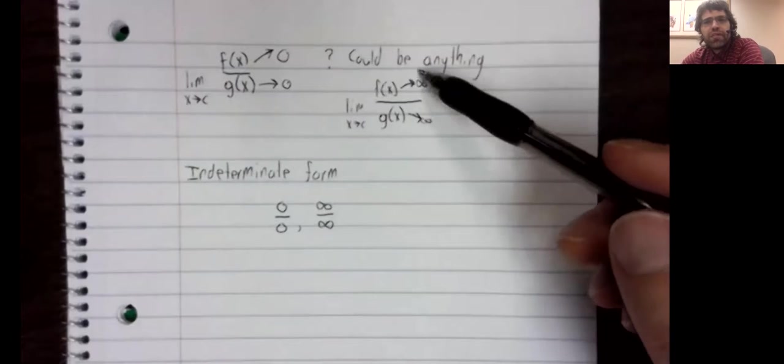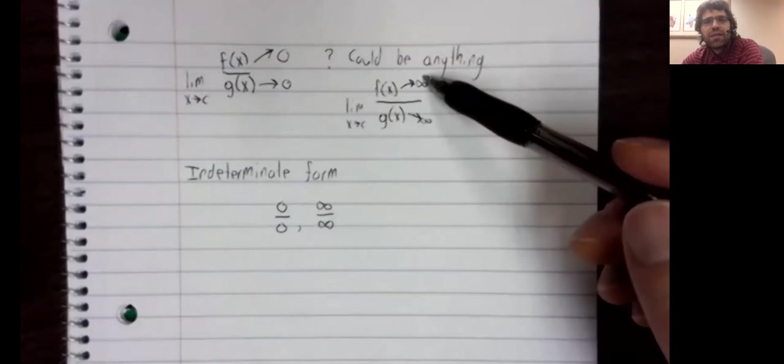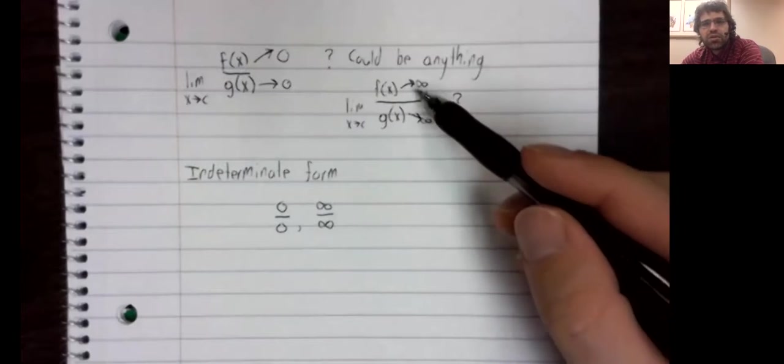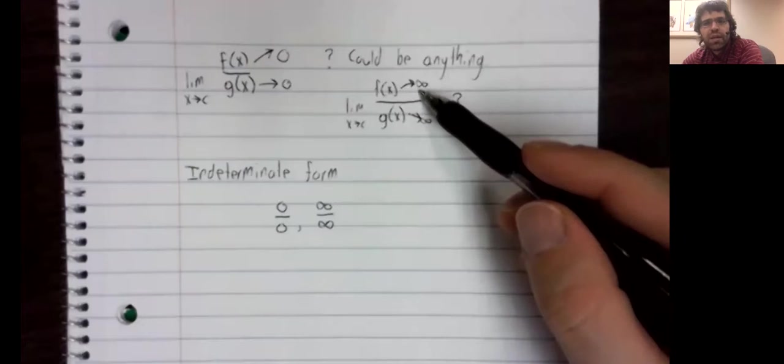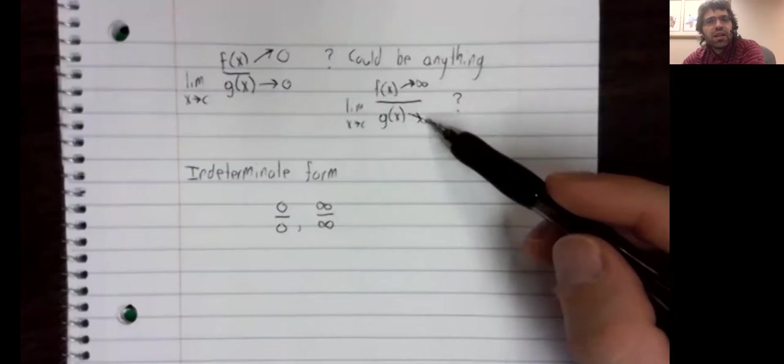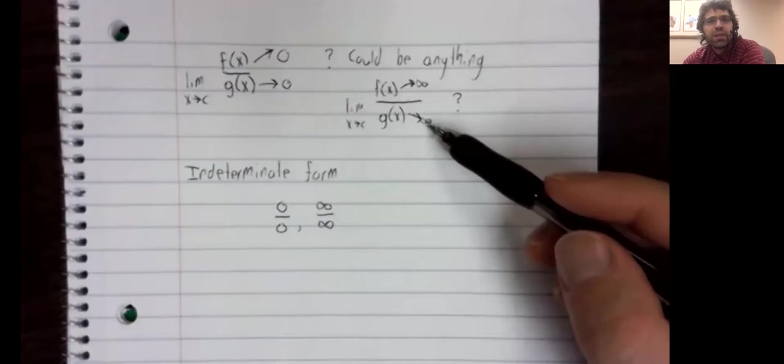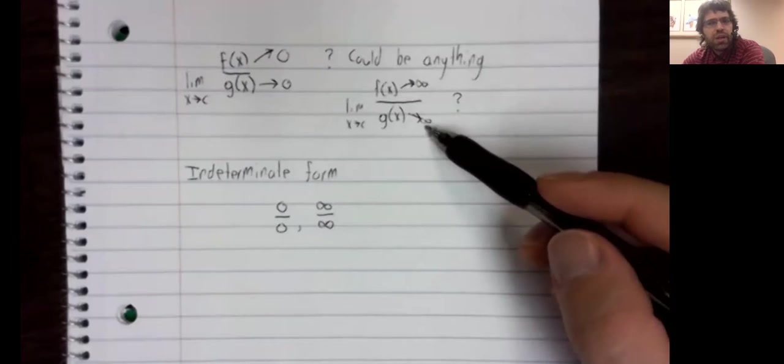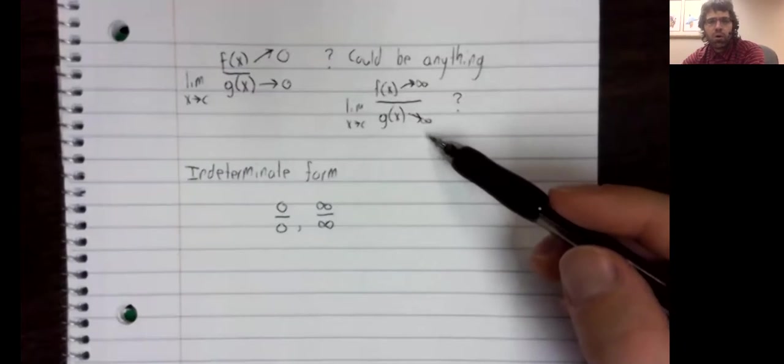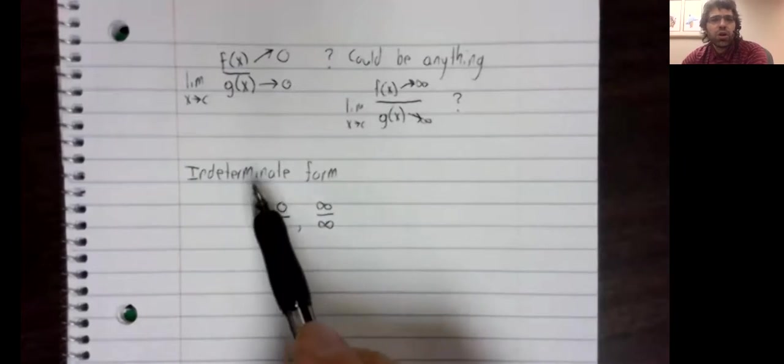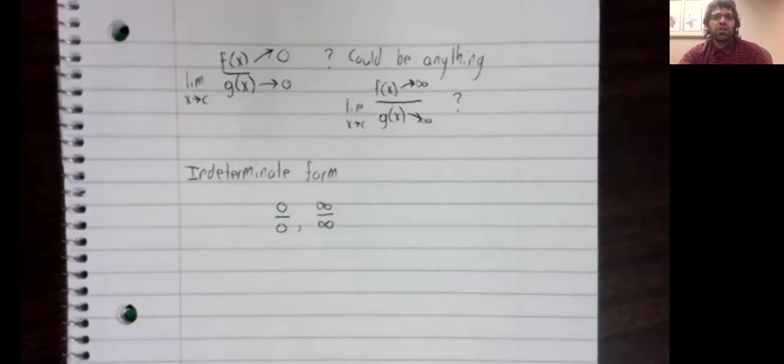Likewise, in a limit, infinity divided by anything but infinity is infinite. So this numerator is trying to make the fraction large, but anything other than infinity divided by infinity is zero. This denominator is trying to make the fraction small. So these are indeterminate because the numerator and denominator are in conflict.